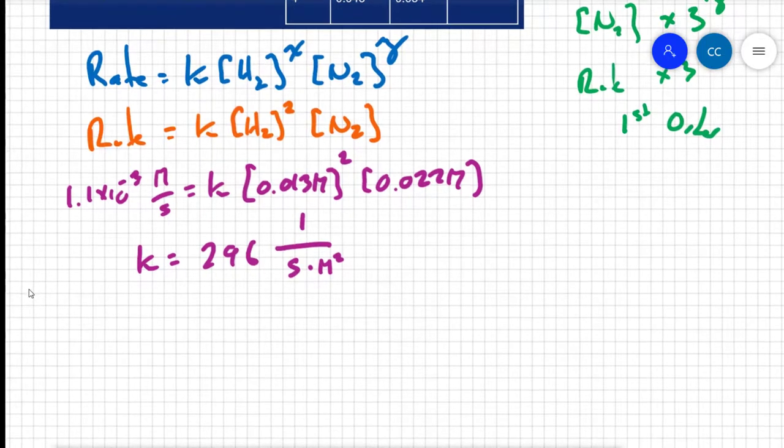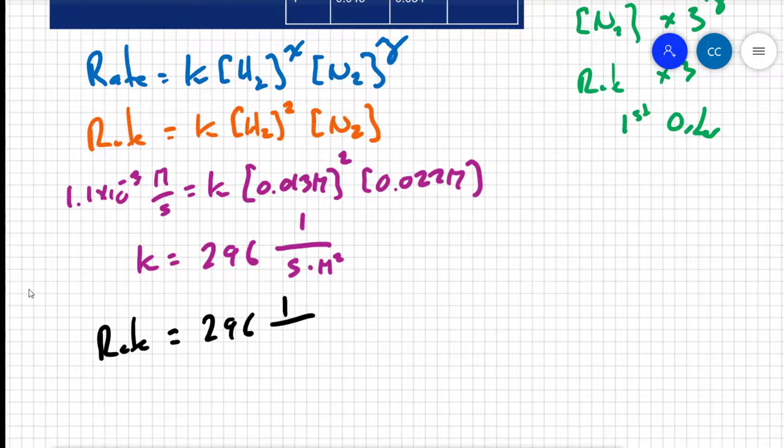Which means I can write a complete rate law that states the rate of this reaction equals 296, 1 over seconds times molarity squared times the concentration of hydrogen squared times the concentration of nitrogen. Now that I have the complete rate law, I can go back up to my data and I see that reaction 4 doesn't have a rate.